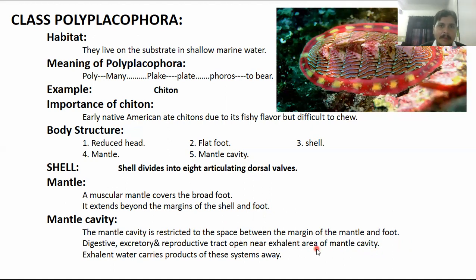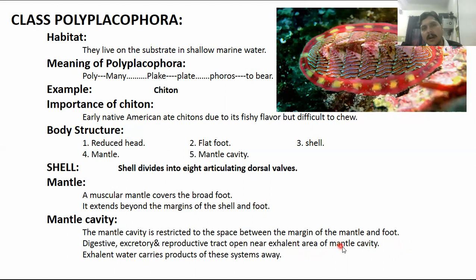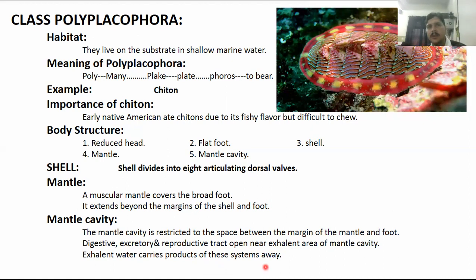The mantle cavity is the middle space between the foot and the mantle. There is a digestive system and an excurrent area of the mantle cavity, with an inhalant area and an excurrent area. There are digestive openings and reproductive openings. The excurrent water carries the products of these systems — the digestive waste and reproductive products (gametes) — through the excurrent tube of the mantle cavity, and they are eliminated from there.